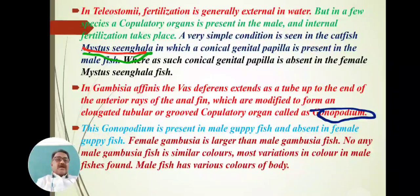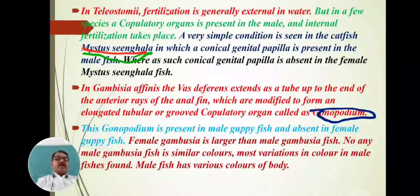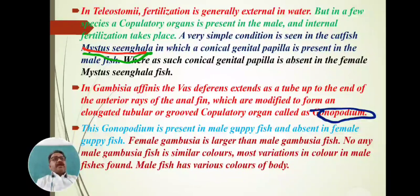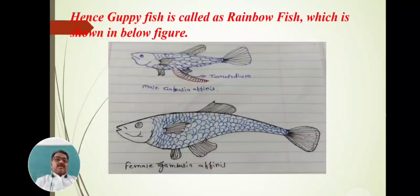Female Gambusia is larger than male Gambusia. Male fish show various colors of the body — color variation is found in male Gambusia affinis, whereas such varied colors are not found in females. Depending on the gonopodium, we can identify whether the fish is male or female Gambusia.